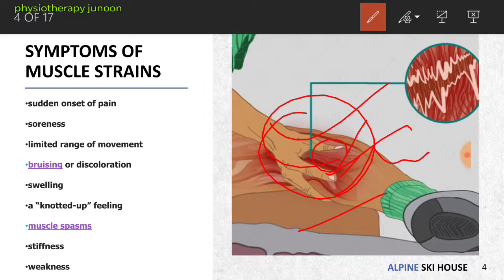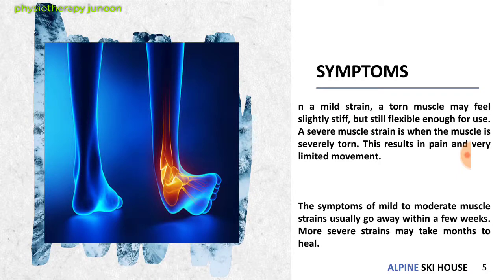A mild strain leaves the muscle feeling slightly stiff but still flexible enough for use. A severe muscle strain, where the muscle is severely torn, results in pain and very limited range of motion. The symptoms of mild to moderate muscle strain usually go away within a few weeks, while more severe strains may take months to heal.